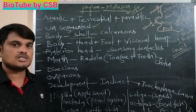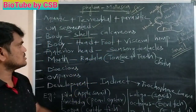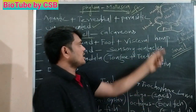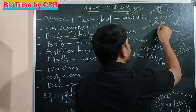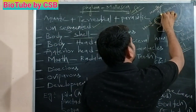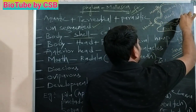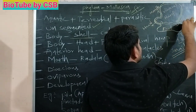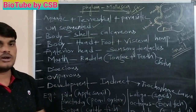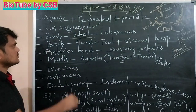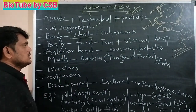Calcareous means calcium carbonate. You can observe the diagram here — this is a snail covered by a calcareous shell. When you break it, you get the body of the organism. The body is divided into three portions.